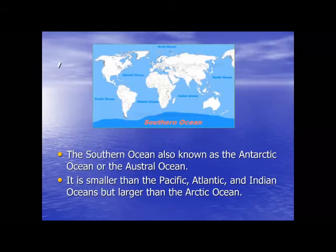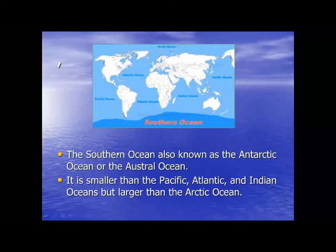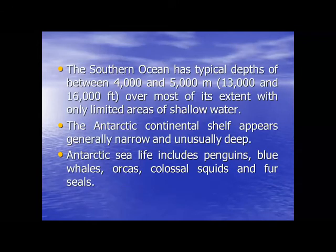The last ocean is Southern Ocean. Southern Ocean is situated at the South Pole of the Earth. This ocean is also known as Antarctic Ocean or Austral Ocean. It is smaller than Pacific, Atlantic and Indian Ocean, but larger than Arctic Ocean — making it the fourth largest ocean. Southern Ocean has a typical depth of 4,000 to 5,000 meters.